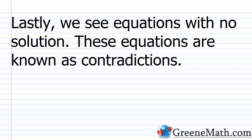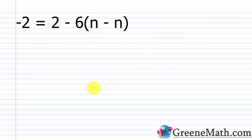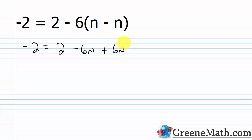Lastly, we have equations with no solution, known as contradictions. No matter what you choose for n, it's never going to work. To see why, let's simplify the right-hand side: we have 2, then negative 6 times n is negative 6n, and negative 6 times negative n is positive 6n. So negative 6n plus 6n — those are opposites and cancel — leaving the nonsensical statement that negative 2 equals 2.